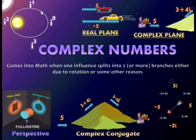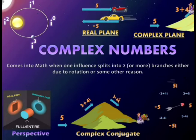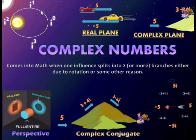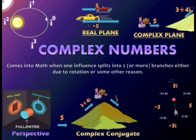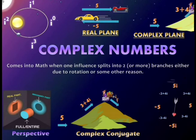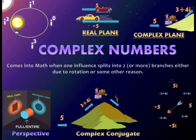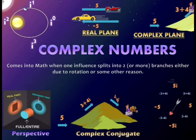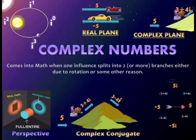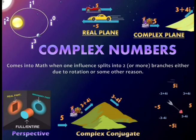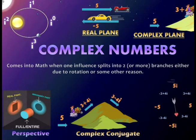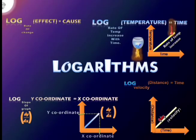What if complex numbers can be visualized with the help of animations like you are seeing on the screen? i raised to 1, a rotation by 90 degrees. i raised to 2, a rotation by 180 degrees. i raised to 3, a rotation by 270 degrees. i raised to 4, a full 360 degree rotation. Complex numbers come into math when one influence splits into two or more branches either due to rotation or some other reason. One branch is called the real part, the other the imaginary part. Complex conjugates are nothing but vertically opposite mirror images of each other. 3 plus 4i is like climbing the uphill of a slope and 3 minus 4i like going downhill.